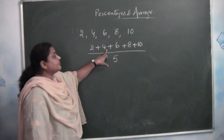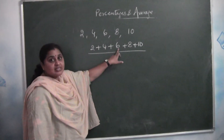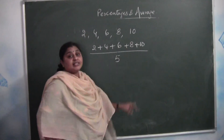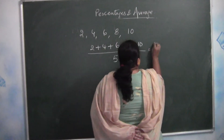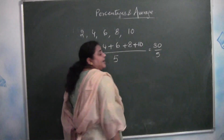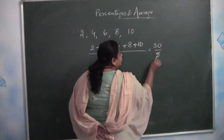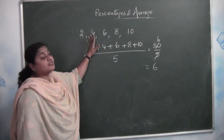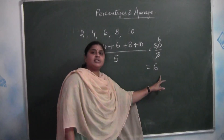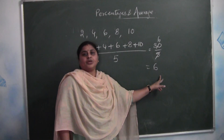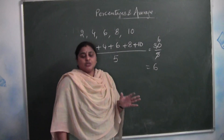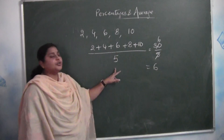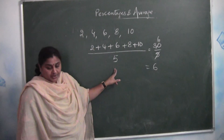Let us add: 2 + 4 = 6; 6 + 6 = 12; 12 + 8 = 20; 20 + 10 = 30. So 30 by 5 — 5 goes 6 times. The average of the first 5 even numbers is 6. So whatever values are given, you add them all and divide. Very simple.